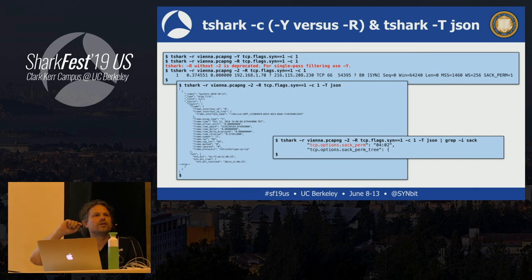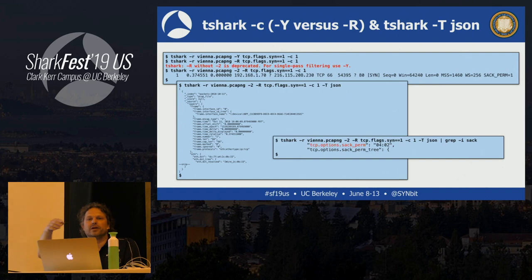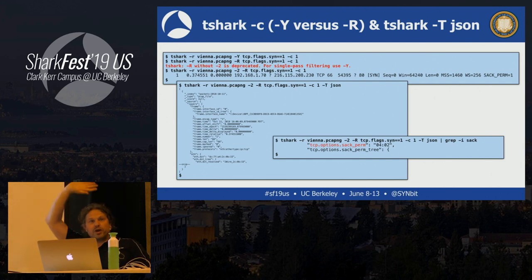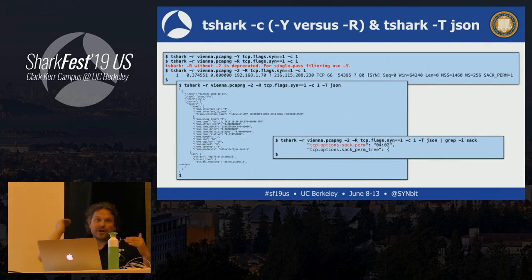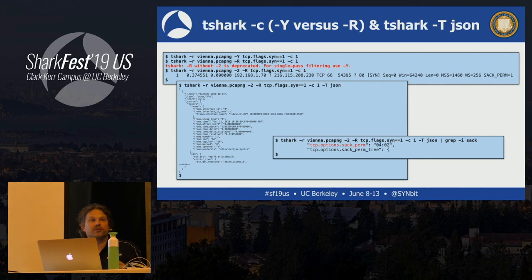Using minus-2 and minus-R, I get the first SYN packet in the trace file. I can extend this by using JSON output — if I grep on 'sack permitted' I find the field name I can use to filter on SACK or SACK permitted. This is one way to find field names without opening Wireshark.